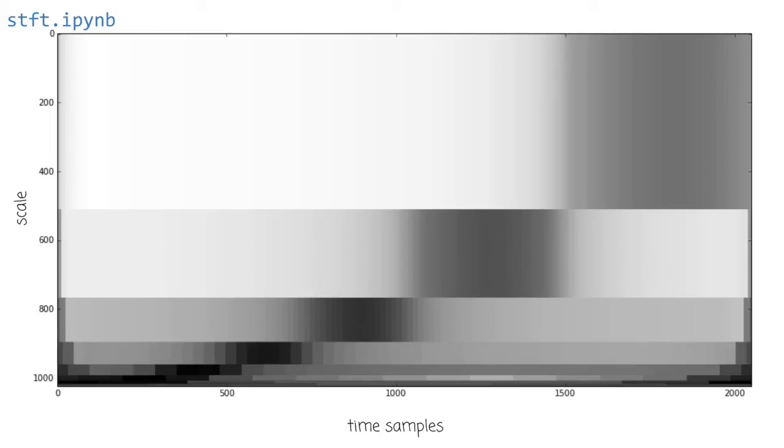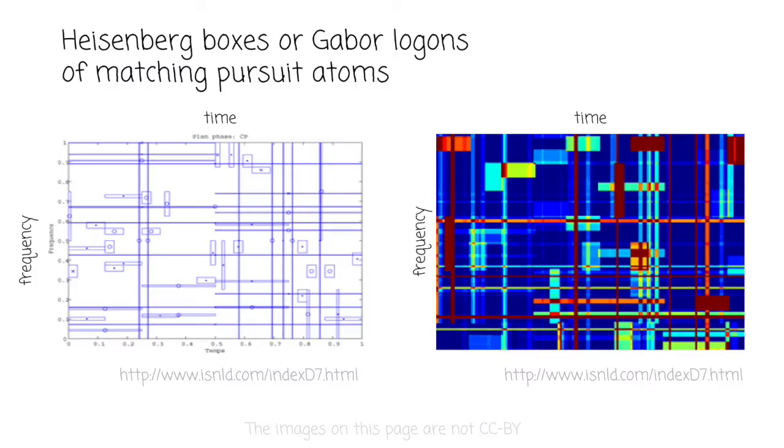And here's another example that I just basically grabbed off the internet, a sort of intriguing looking display of matching pursuit atoms. And these were, I believe, computed from the scale of the atom, and then calculating the implied time localization from the Gabor uncertainty principle.